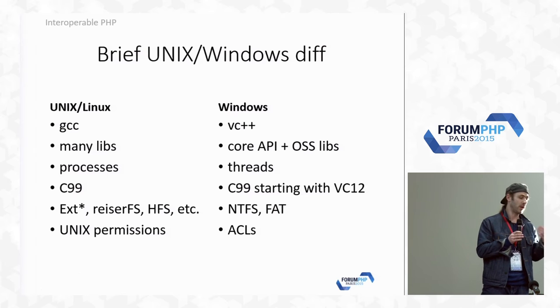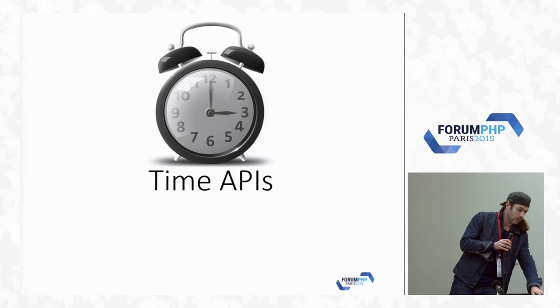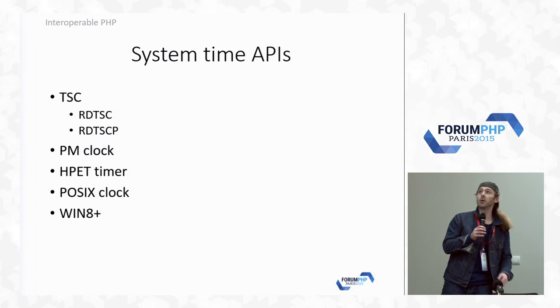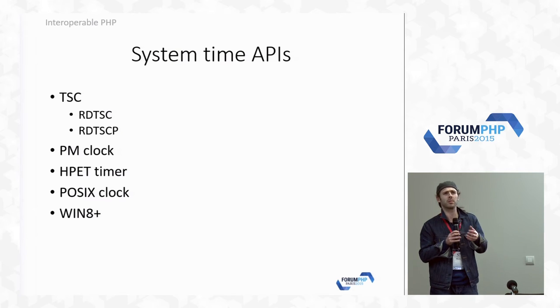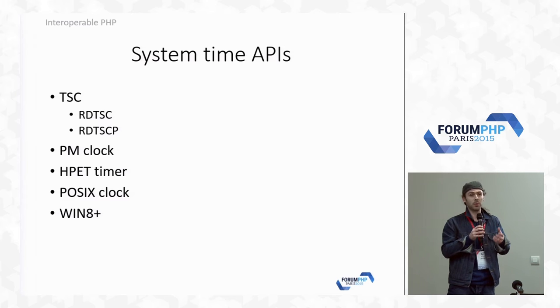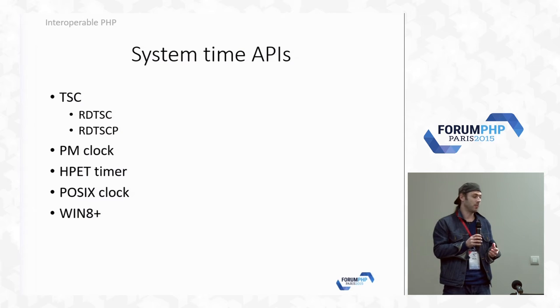I'm skipping the differences in file system and permissions so we can have more internal details. Going straight ahead to the Time API. Time API is actually a fragile topic — we have from time to time some bug reports about timings in PHP, but the bugs are often not fixable in PHP itself.